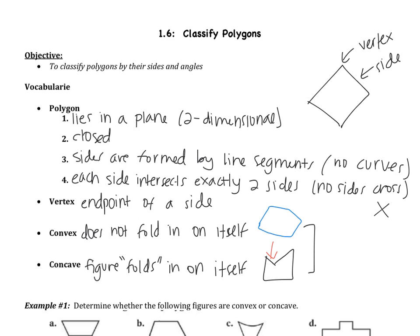Special note about convex and concave. These figures, or these terms, apply to polygons. So you would not say that a circle is convex or concave because a circle is not a polygon.